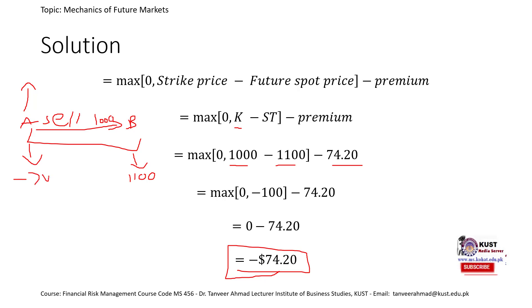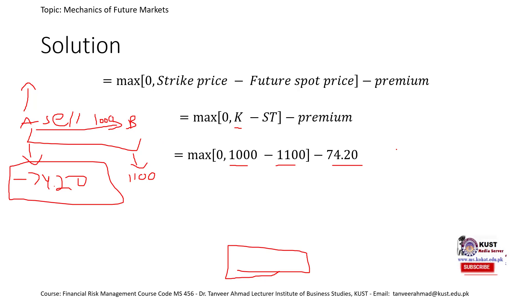Another way to look at it: if A holds the asset and the market price is 1100, instead of selling to B for 1000, A would sell it in the open market for 1100. In that case, A would have been better off by 74.20 had A not entered into this option contract. But the previous understanding is more intuitive, so let's look at the second case.